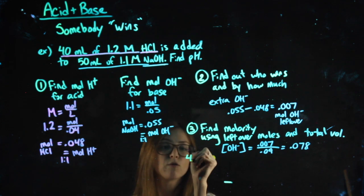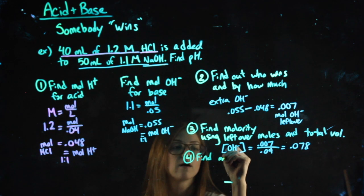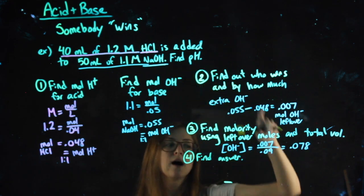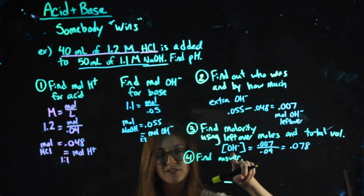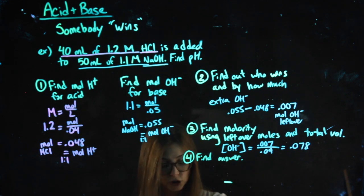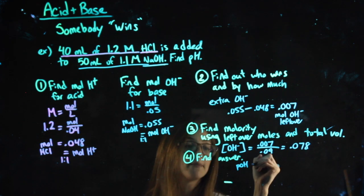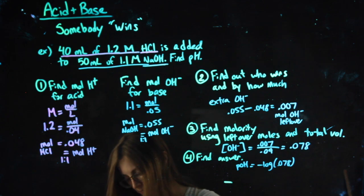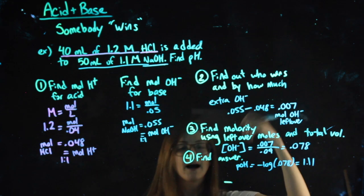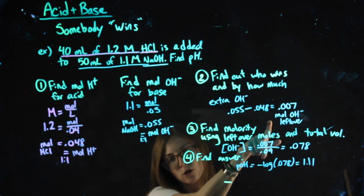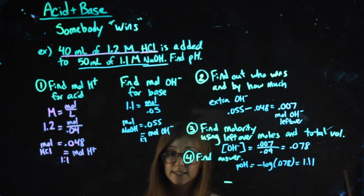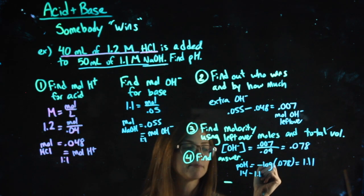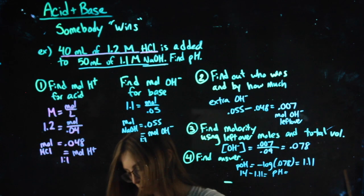My last step, step four, would be to find the answer. Generally that means finding pH. I can't just negative log this because if I negative log my OH-, that gets me my pOH. So my pOH is going to be negative log of 0.078, which is 1.11. That answer should make sense - we know what we had leftover was OH, so this should be a basic solution. 14 minus my pOH will get me my pH, which is 12.89.